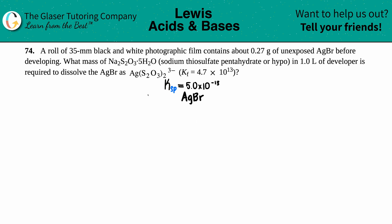Number 74. A roll of 35 millimeter black and white photographic film contains about 0.27 grams of unexposed silver bromide, AgBr. Before developing, what mass of Na₂S₂O₃·5H₂O — sodium thiosulfate pentahydrate, or hypo in the photography world — in 1.0 liters of developer is required to dissolve the AgBr as Ag(S₂O₃)₂³⁻? They give us a Kf of 4.7 times 10 to the 13th.